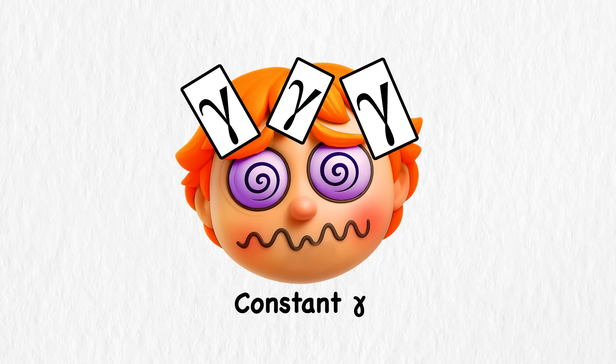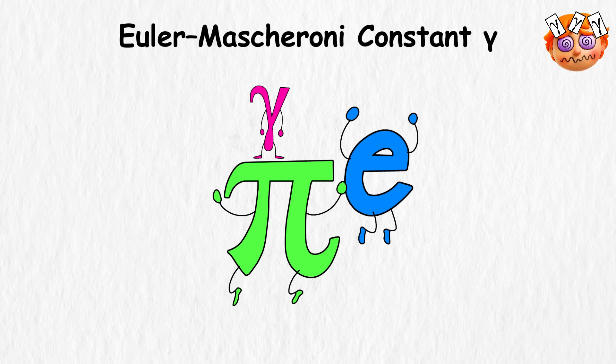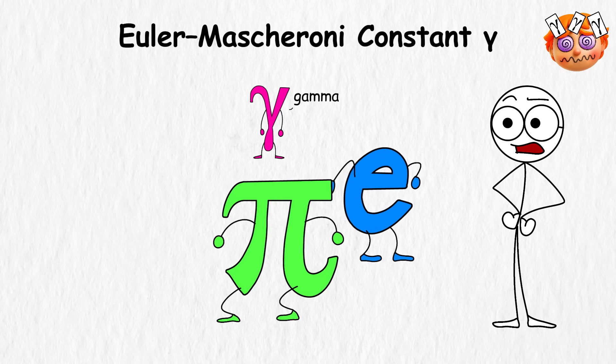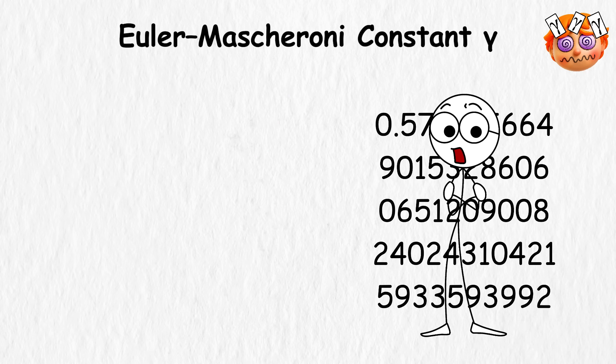Euler-Mascheroni Constant, Gamma. Some numbers get all the attention, like pi or e, but then there's the Euler-Mascheroni Constant, usually called Gamma. It shows up in equations everywhere, yet almost nobody outside of math has heard it. Its value starts at about 0.577, and then the decimals just keep going forever without ever repeating.